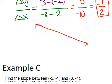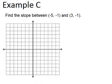Alright, let's look at the last example. Find the slope between (-5, -1), which is right here, and (3, -1).